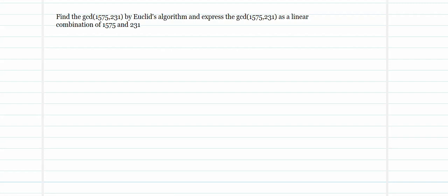In Euclid's algorithm, we begin with A, the biggest number, and B, the smallest number. So out of the two numbers, 1575 is bigger and 231 is smaller. Q is the quotient when A is divided by B, and R is the remainder when 1575 is divided by 231. Now, 231 goes into 1575 six times and leaves a remainder of 189. This being non-zero, the algorithm continues by replacing A with B and B with R.